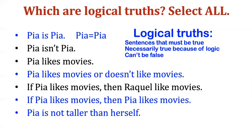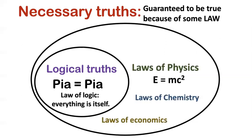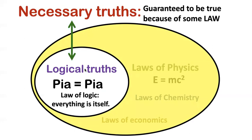As I'm going to use the word 'necessary truth' in this class, I basically mean the same thing as logical truth. Necessary truths are sentences that can't possibly be false for some reason or other, and logic is just one of those reasons. You might realize that not all necessary laws have to be logical — we talk about laws in physics, chemistry, or economics. If something has to be true in those domains, it would count as a necessary truth of physics or chemistry, but not a logical truth. Since we're not going to talk about E=mc² here, when I talk about necessary truths in this class I mean it to be synonymous with logical truths, though in a broader context there are necessary truths that aren't purely logical ones.